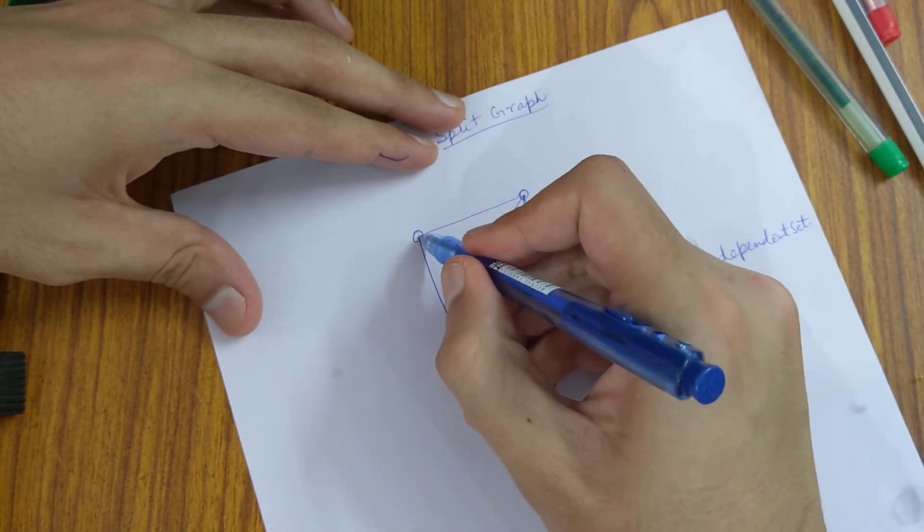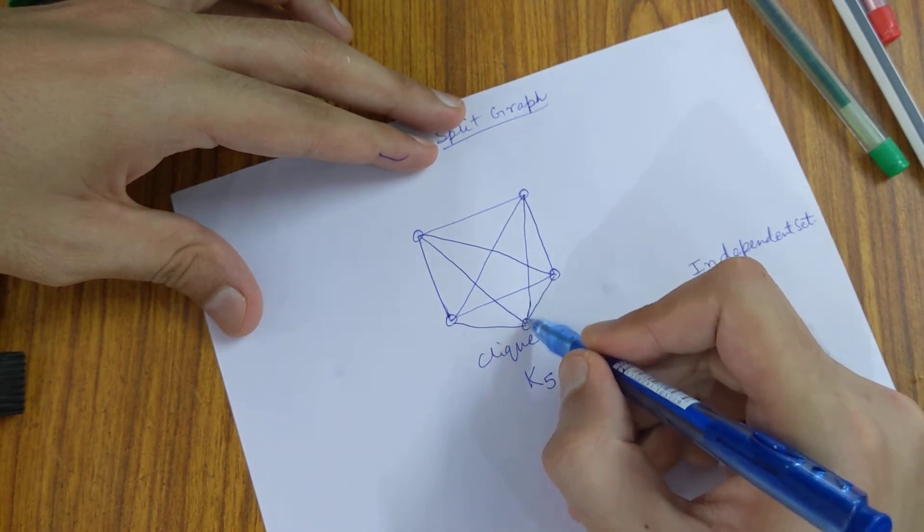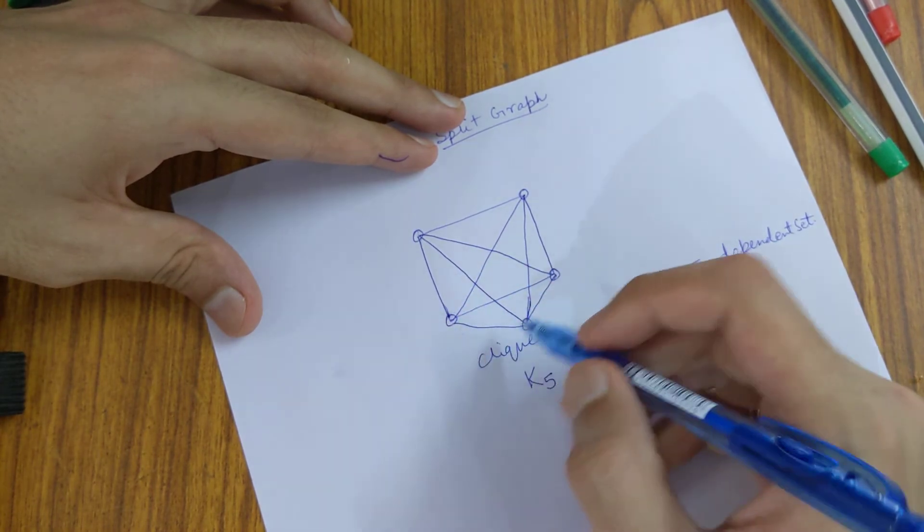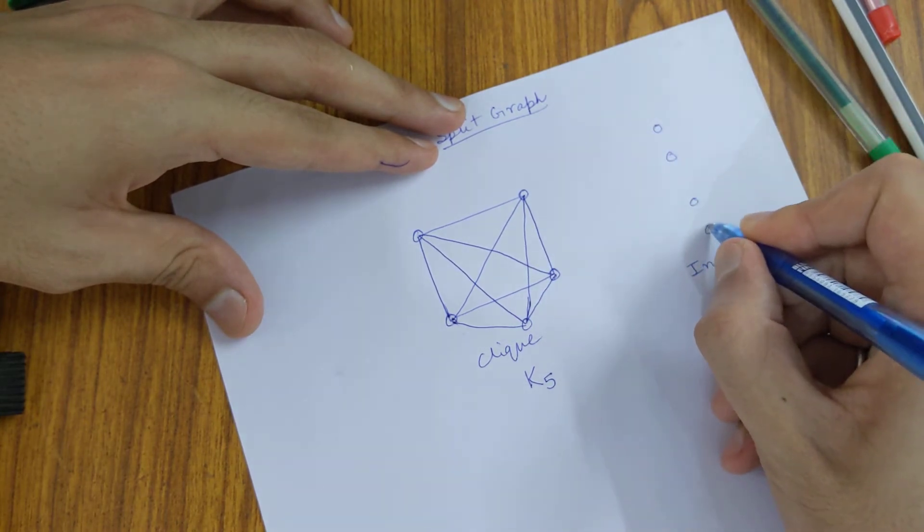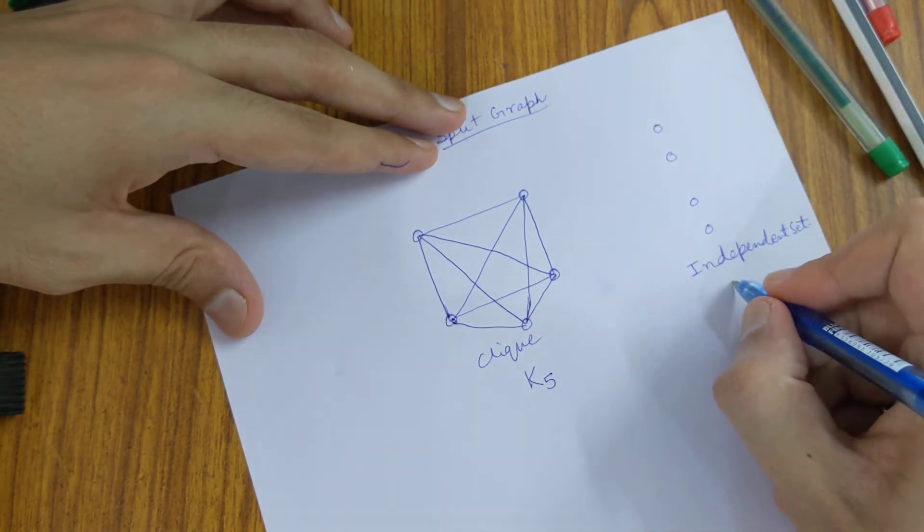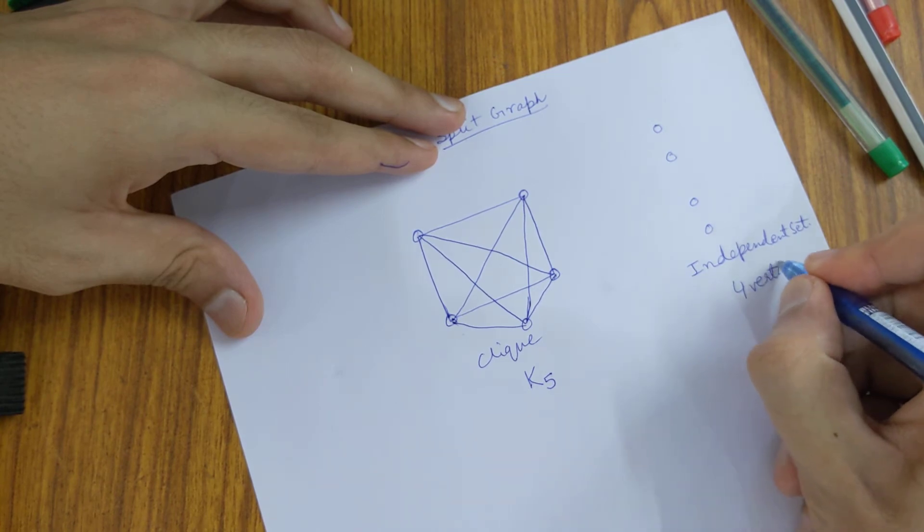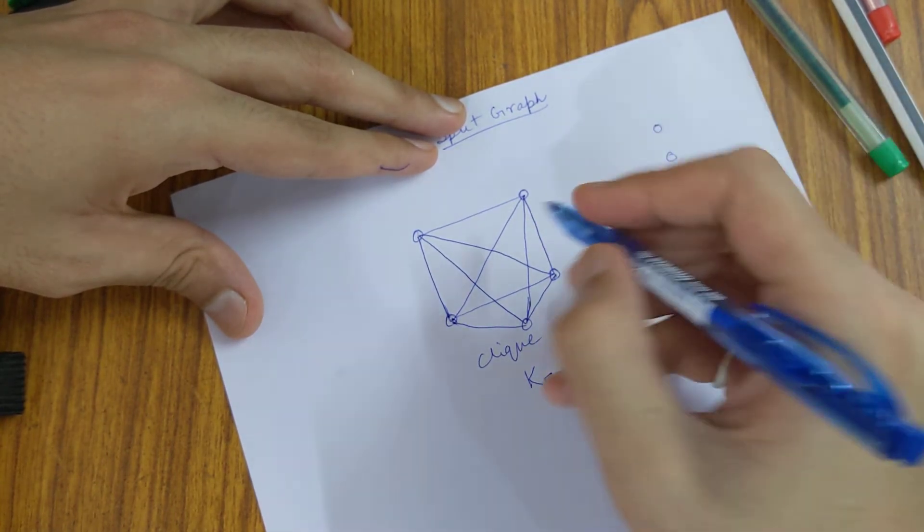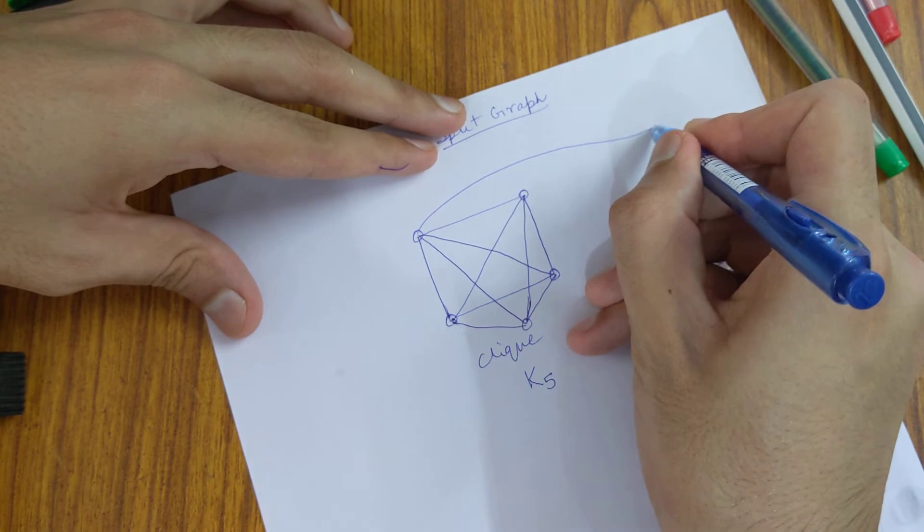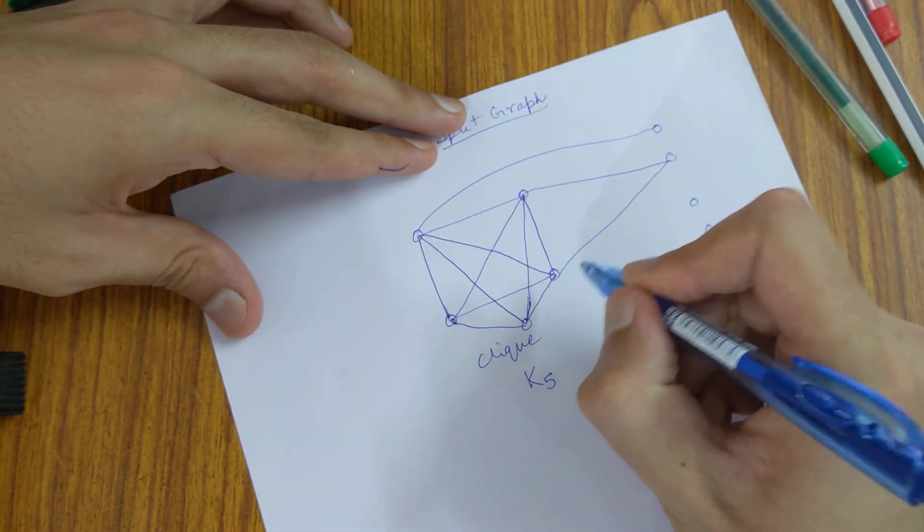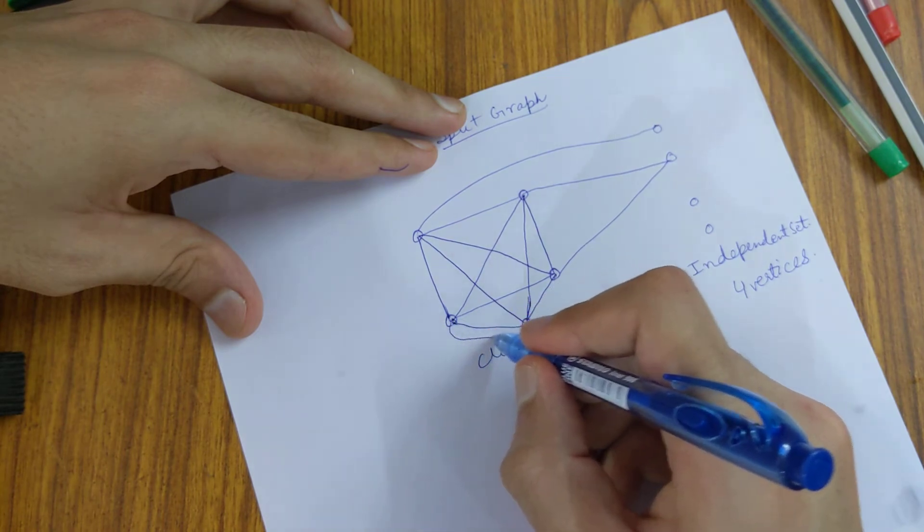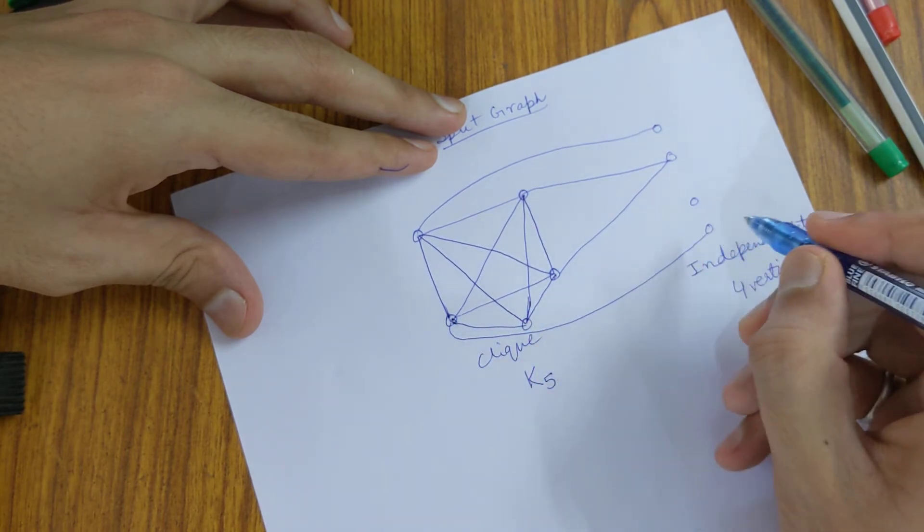Each of these vertices is connected to each other vertex here. And an independent set is one with four vertices. None of them are connected, but they can be connected to the clique like this or maybe something like this.